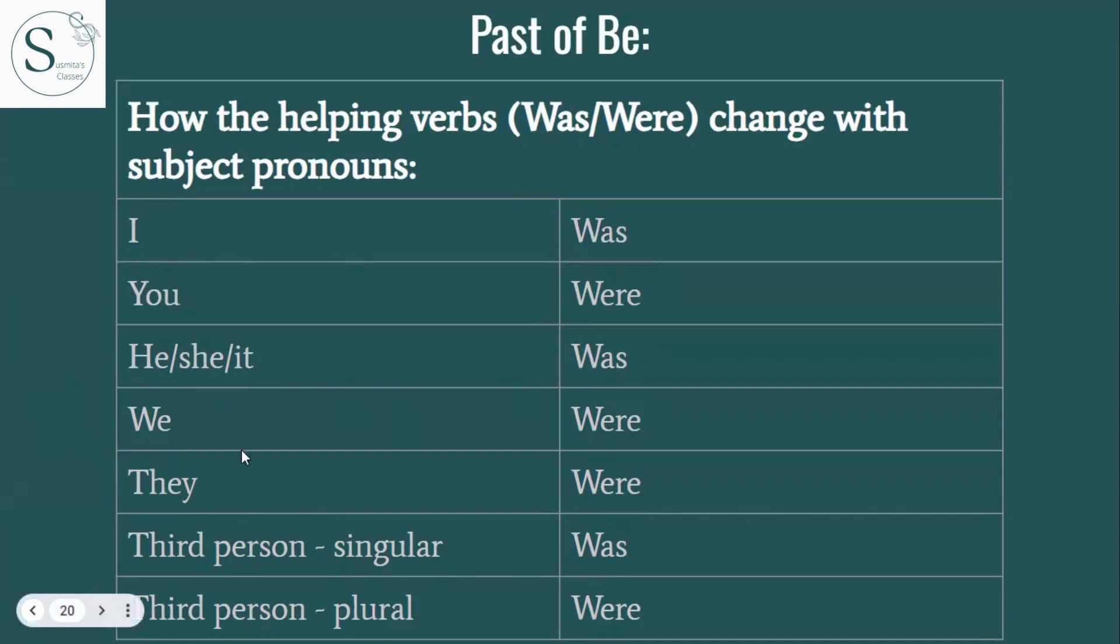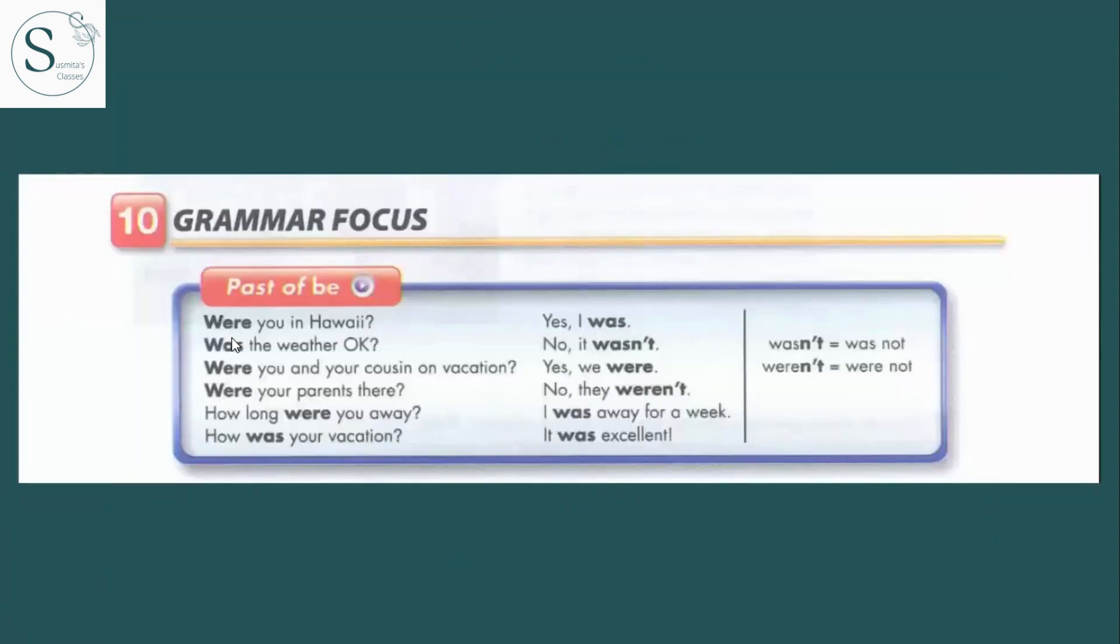Now let us look at the examples. Were you in Hawaii? Yes, I was. Was the weather okay? No, it was not. Were you and your cousin on vacation? Yes, we were. Were your parents there? No, they were not. How long were you away? I was away for a week. How was your vacation? It was excellent.